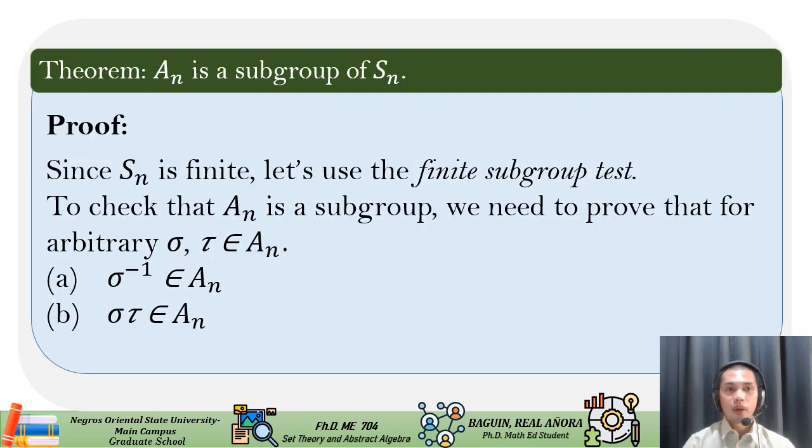We have the theorem: A sub n is a subgroup of S sub n. Now, let's prove it. Since S sub n is finite, let's use the finite subgroup test. To check that A sub n is a subgroup, we need to prove that for arbitrary sigma and tau that is in A sub n: (a) sigma inverse is in A sub n, and (b) sigma tau is in A sub n.